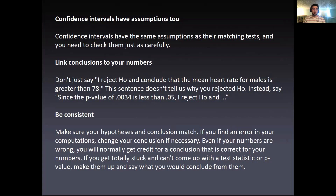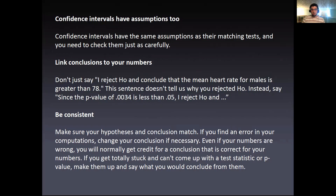Make sure you link your conclusions to your numbers. Don't just say 'I reject the null and conclude that the mean heart rate for males is greater than 72' — that sentence doesn't tell us why you reject it. Instead, use the p-value and your alpha level: 'Since the p-value of 0.0034 is less than 0.05, I reject the null...' and then the rest of your conclusion. Make sure your hypotheses and conclusions match. If you find an error in your computations, change your conclusions if necessary. Even if your numbers are wrong, you will normally get some credit for a conclusion that is correct based on your numbers. If you get totally stuck and can't come up with a test statistic or p-value, make one up and state your conclusion based on those — they're looking for a comprehensive understanding of the whole process.